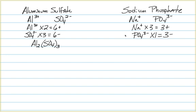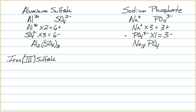For sodium phosphate, we have the sodium ion and the phosphate ion. Since phosphate has a three-minus oxidation state, we need three sodiums to give us plus three and one phosphate to give us three negative. The formula is Na₃PO₄. We don't include parentheses around the phosphate because we don't have more than one of them, and we don't put sodium in parentheses because it's a monatomic ion.